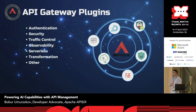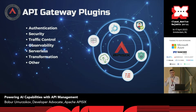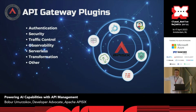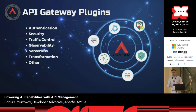In other words, the API gateway is an abstraction layer between your clients and the back-end service network. Now that we know what an API gateway is, let's talk about API gateway plugins. They are just additional components where you can add functionality to the API gateway to provide cross-cutting concerns like authentication, security, traffic control, caching, and data transformation.